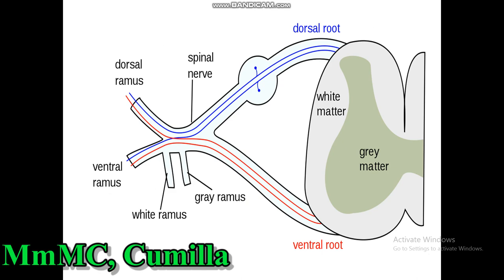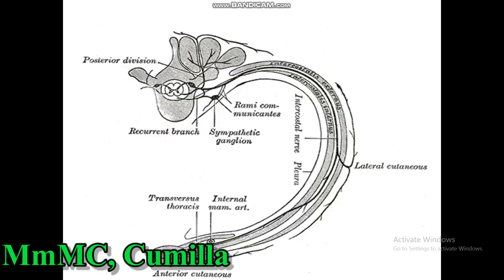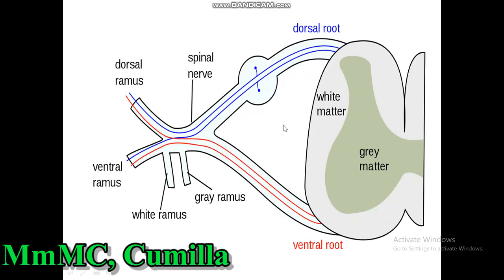This is the diagram of the intercostal nerve, and this is the diagram of how a spinal nerve is formed.